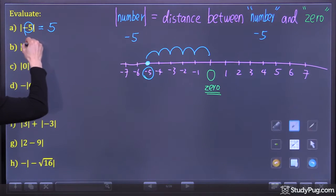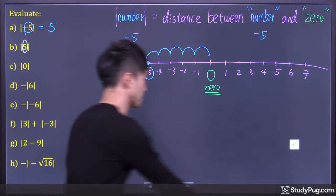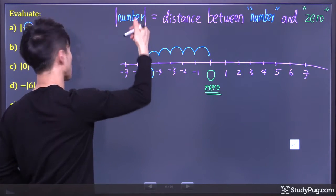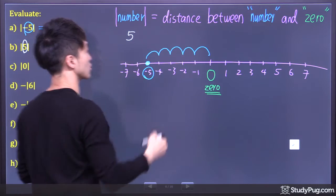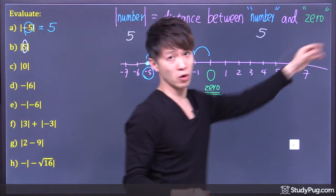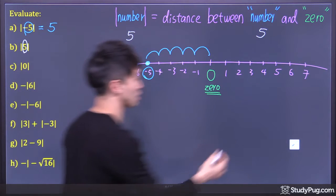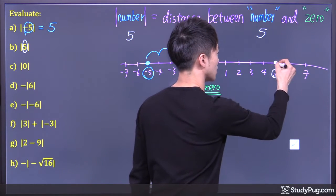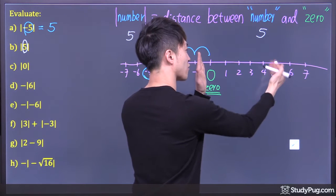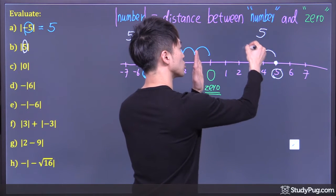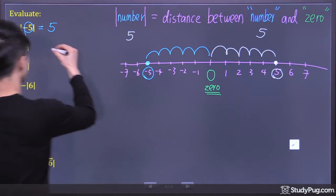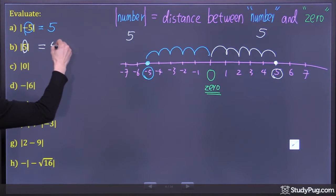Question B: absolute value of 5. Inside the absolute value, the number we have is 5. That is defined as the distance between the number 5 and 0. So 5 is right here. What is the distance between this number and 0? We say 5 is 1, 2, 3, 4, 5 — five units away from 0. So the answer here is also 5.